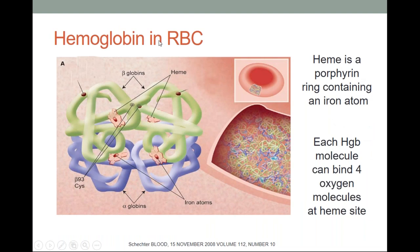Hemoglobin in the RBC has two components: the heme part and the globin part. The globin part is mainly proteins. Heme is a porphyrin ring containing the iron atom. You have the globin chains — the beta globins and the alpha globins. Each hemoglobin molecule can bind four oxygen molecules at the heme site. So iron is present in the heme portion of the hemoglobin, and the main role of iron is to carry oxygen as part of hemoglobin.